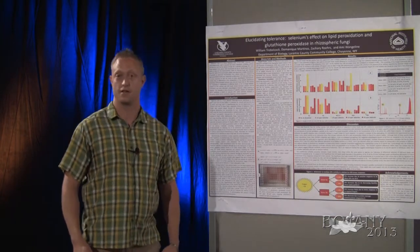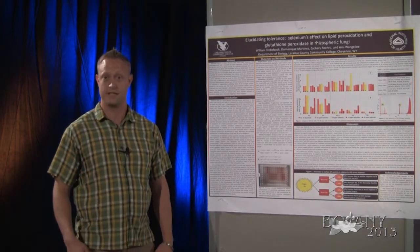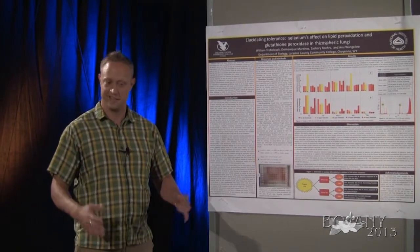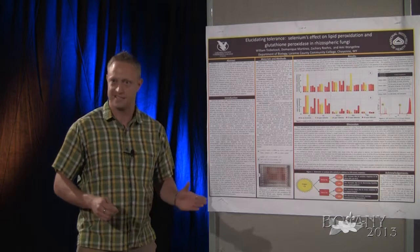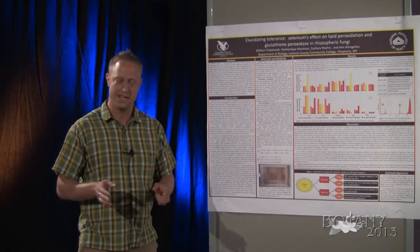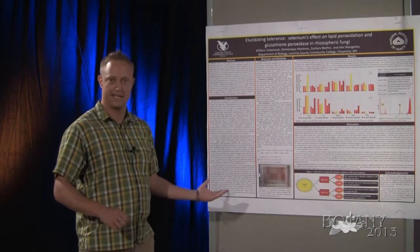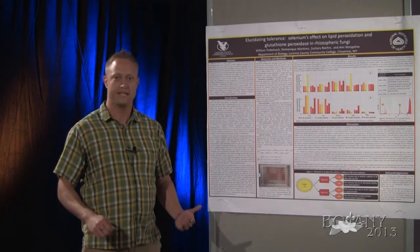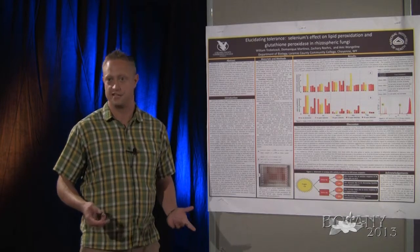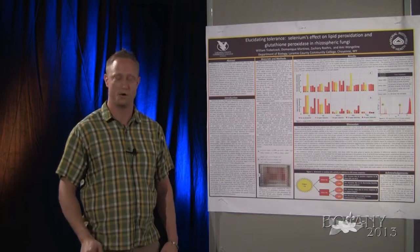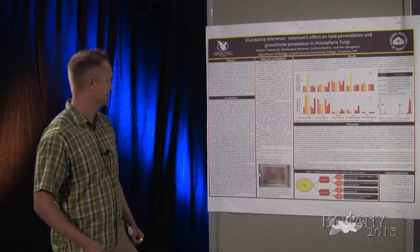Animals and bacteria are known to use selenium within selenoproteins such as glutathione peroxidase. The window of toxicity and necessity is pretty small, but in evolutionary context the paradigm is that both plants and fungi have lost the ability to code for selenium and therefore don't use selenium within these proteins like animals and bacteria do.